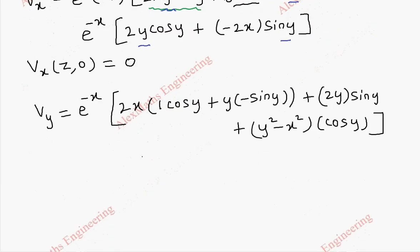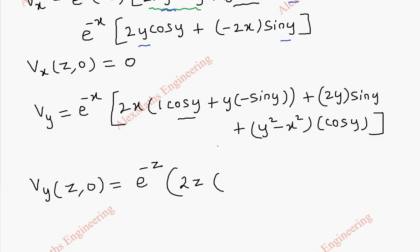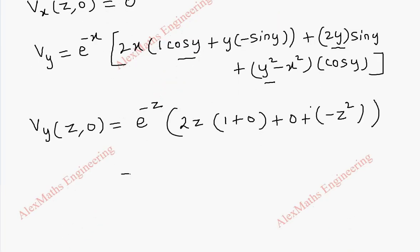Now we evaluate vy of (z, 0). Substituting y = z and x = 0: the bracket with 2z gives 1·cosz term which simplifies; the y terms present cause certain parts to vanish. We are left with e^(-z) times 2z and plus minus z² into 1, so finally vy of (z, 0) = e^(-z) into (2z minus z²).